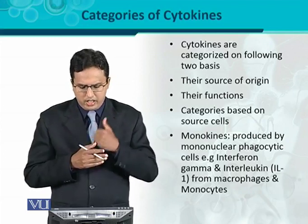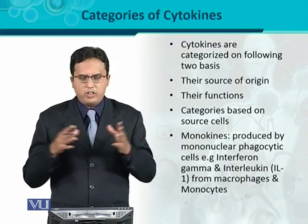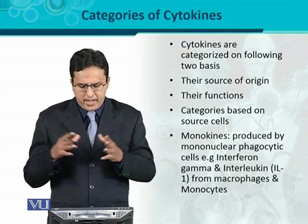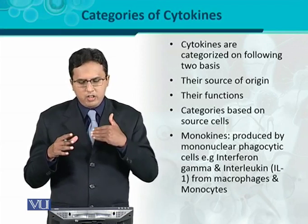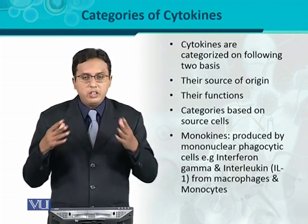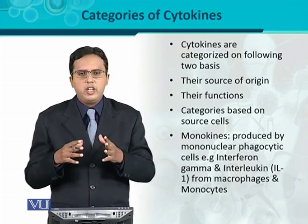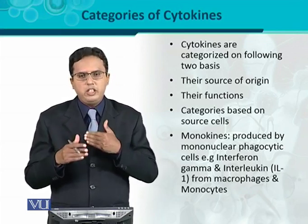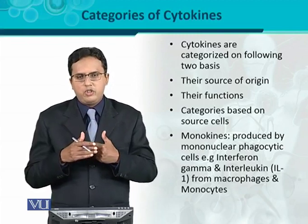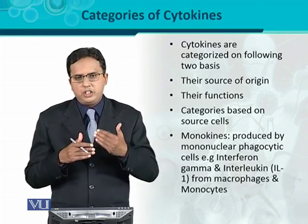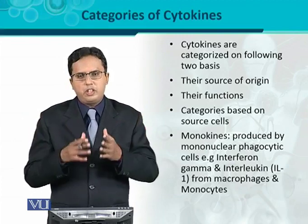The best examples of monokines are interferon gamma and interleukin-1, which are secreted from macrophages and monocytes. These are considered monokines because monocytes and macrophages are mononuclear phagocytic cells.